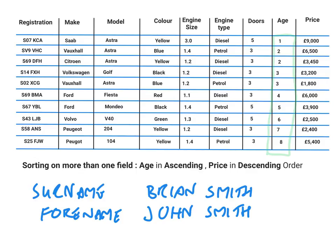You'll notice that we have got a couple of twos and a couple of threes, and there isn't any particular order there yet. We want the price to be in descending order, and you'll notice that we actually inadvertently have it — because every time there is the same car that is two years old, the most expensive car has been displayed first. So it's sorted first on the age field — that's quite important — then it's sorted on the price field. The order in which it is sorted is important.